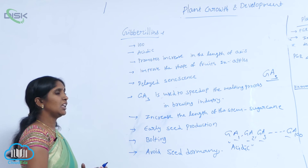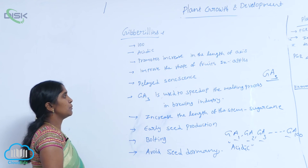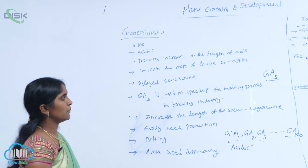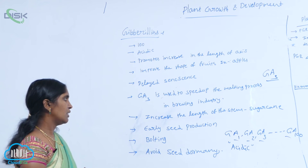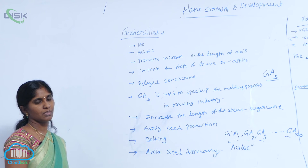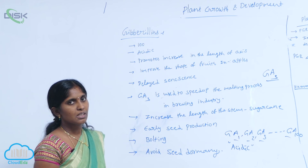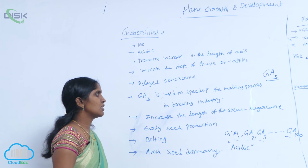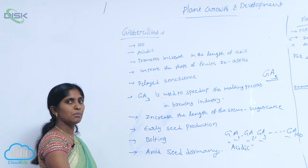Gibberellins delay senescence. GA3 is used to speed up the malting process in brewing industries and to increase the length of the stem in sugar cane — meaning inter-nodal space is increased, which results in increased stem length.